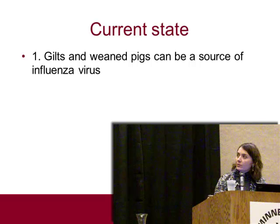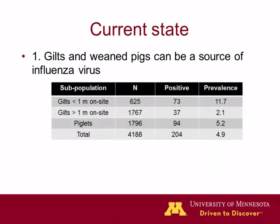In a study we are completing at the University, monitoring five farms for a year, we found that over 12% of gilts can be positive. It doesn't seem like a large number, but if it's ongoing, that is enough to introduce new viruses into the populations. At the same time, they can maintain the viruses — depending on your management in the gilt development units, they can become a reservoir of influenza. Things you can do include isolating the gilts and testing.